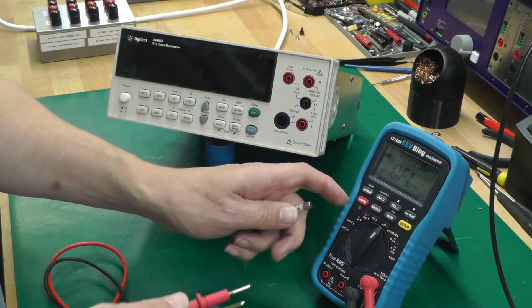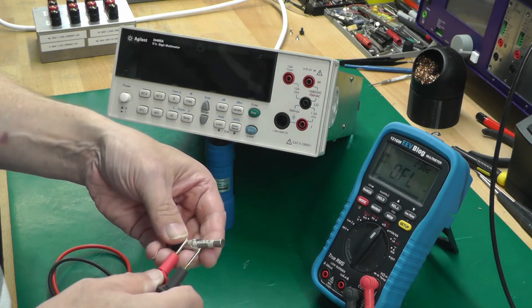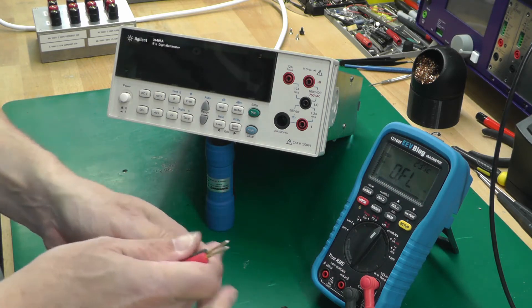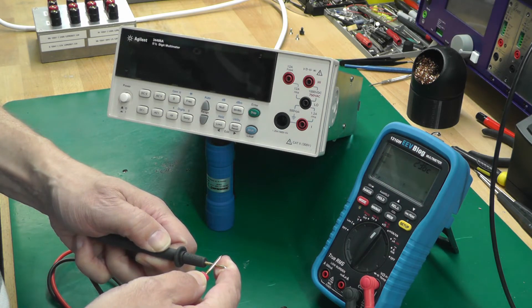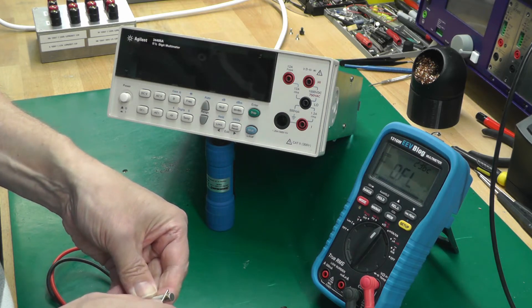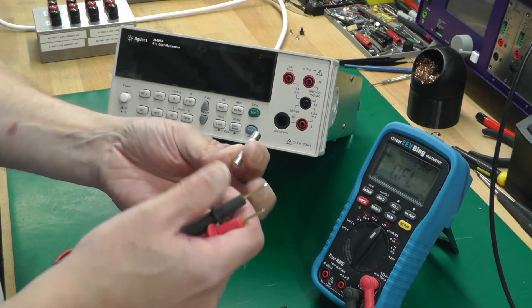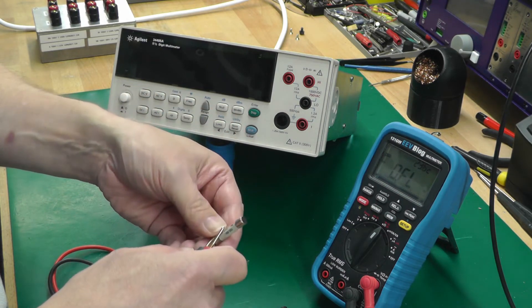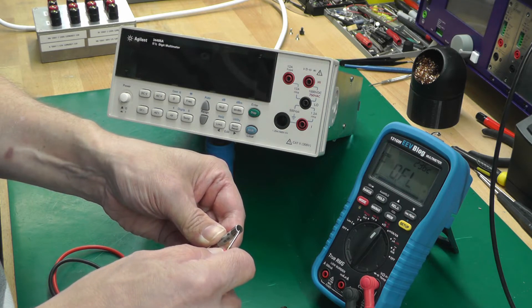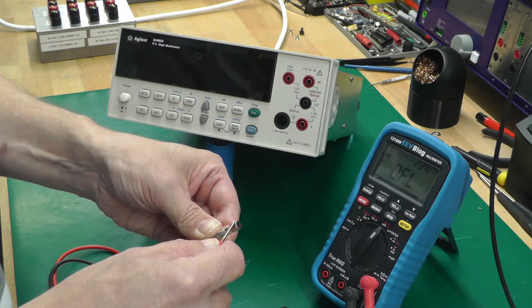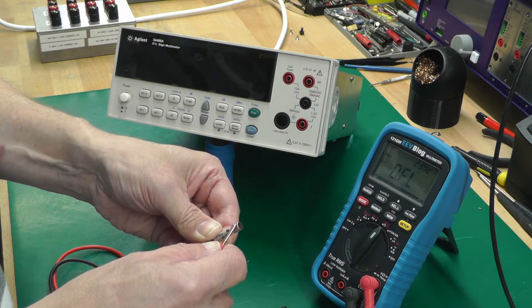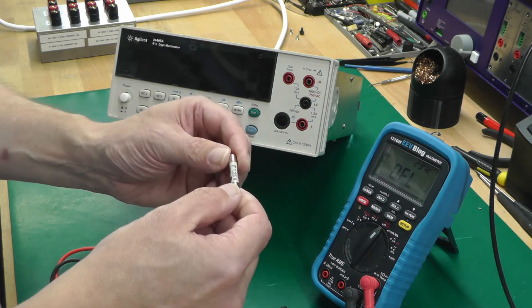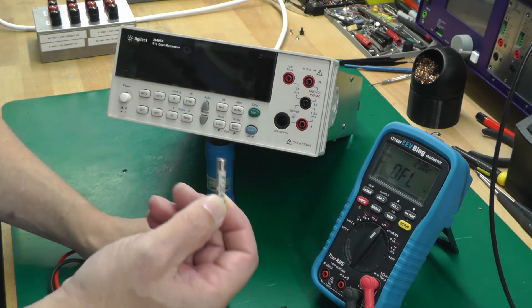I've hooked up my multimeter here just to check out the fuse. This front panel fuse is blown. It's supposed to be a 1.25 amp fuse and it's blown. Right, so I'll replace it.